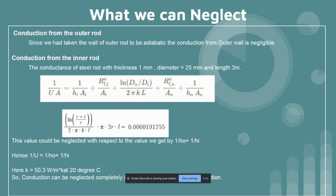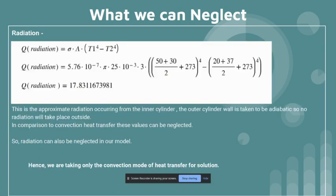Next, we are calculating the radiation part. Radiation from the outer wall is assumed to be negligible as the walls were assumed adiabatic. Now we are calculating the radiation from the inner cylinder, which came out to be negligible in comparison to the convection part. Hence, we are considering only the convection mode of heat transfer for the solution.